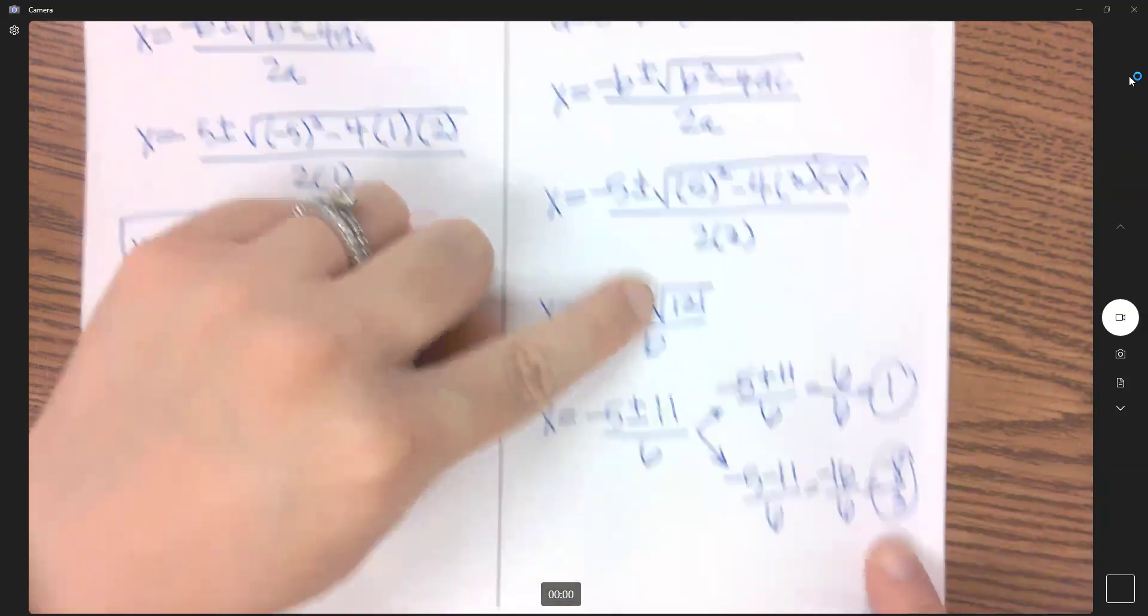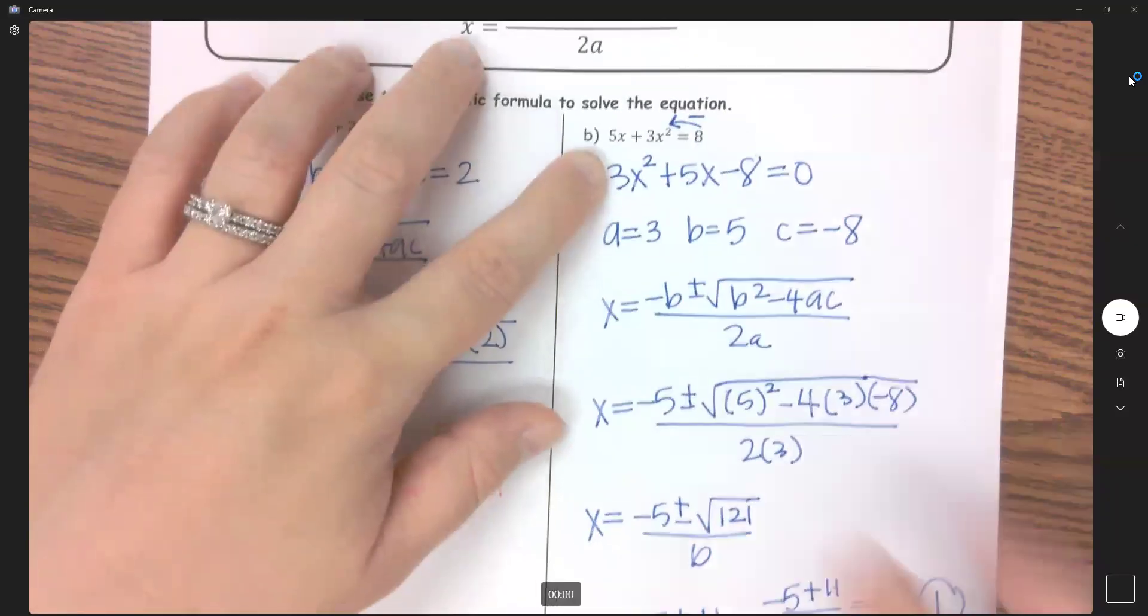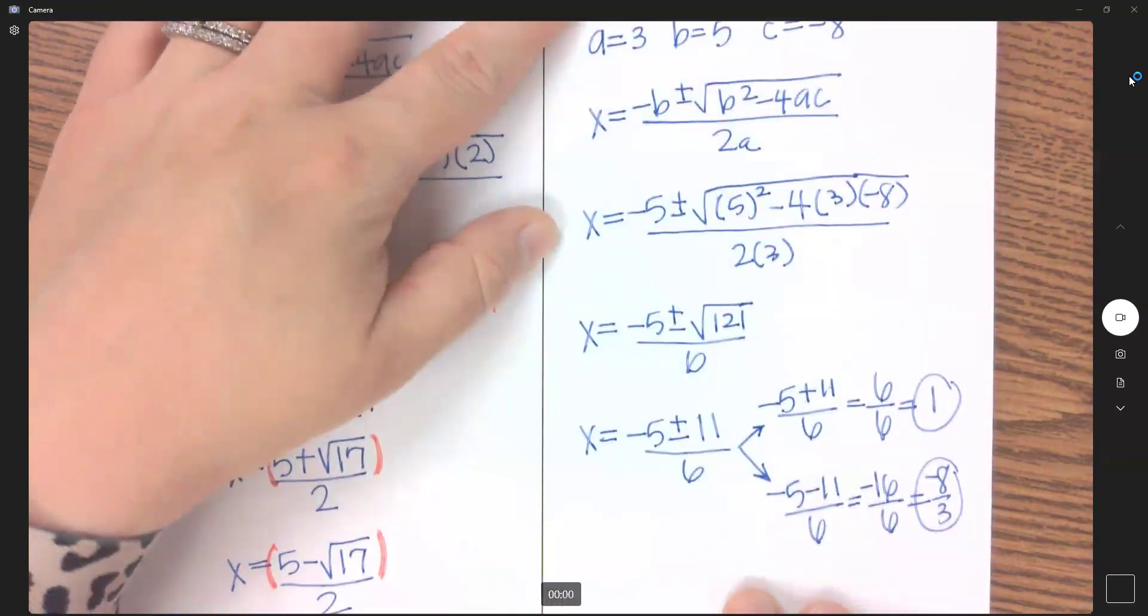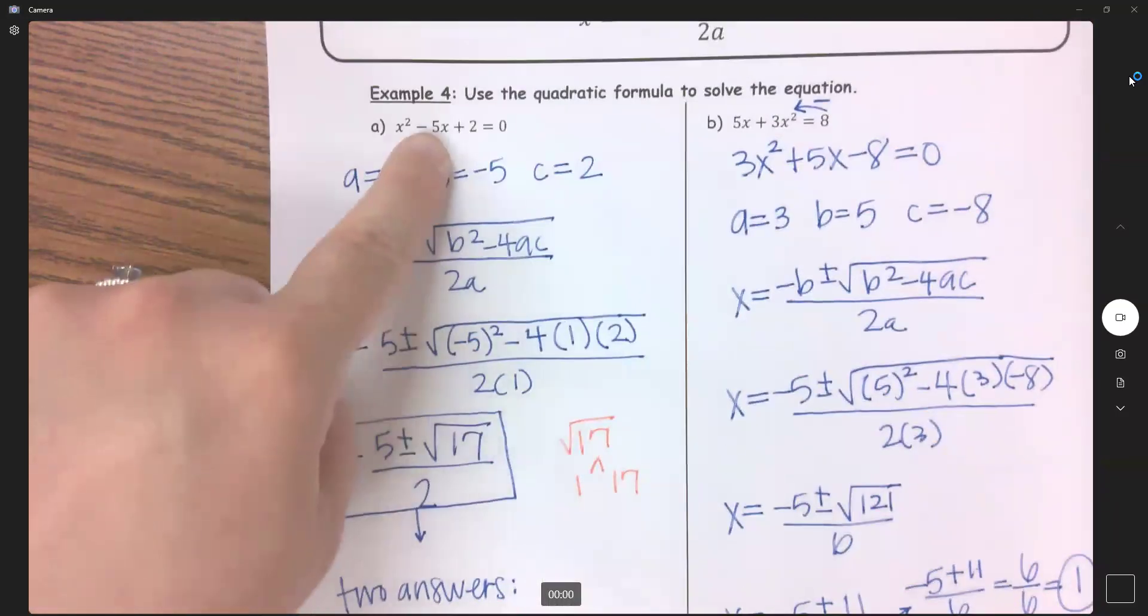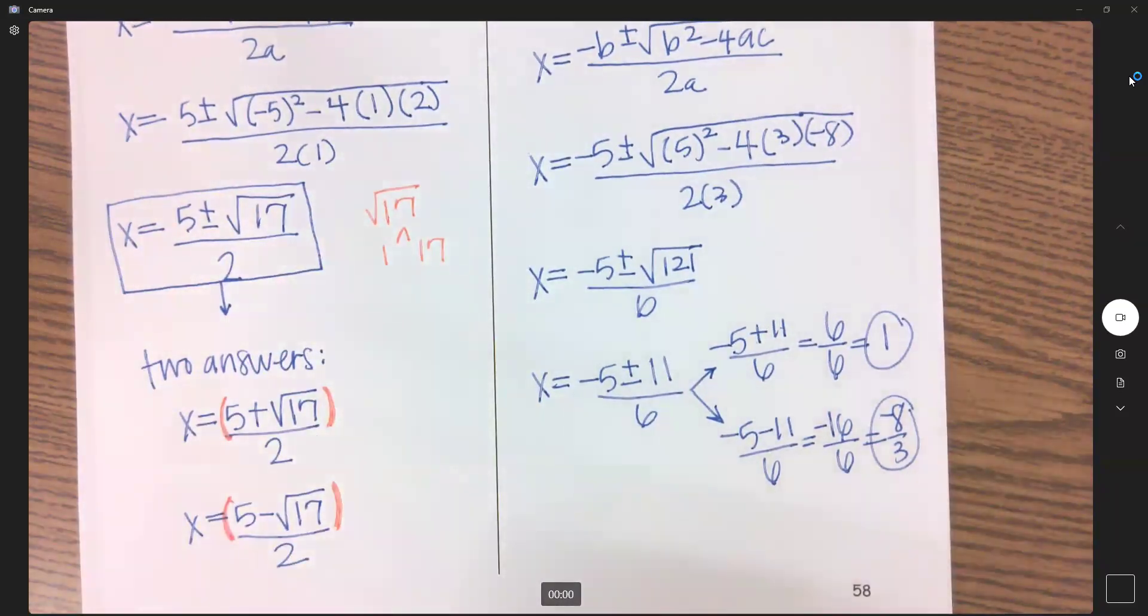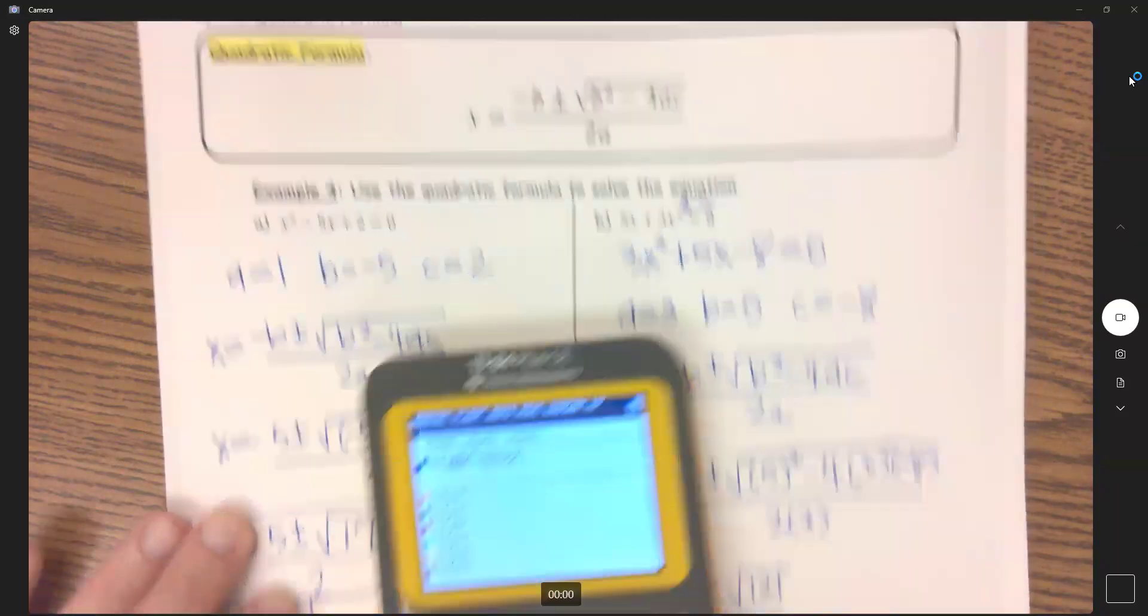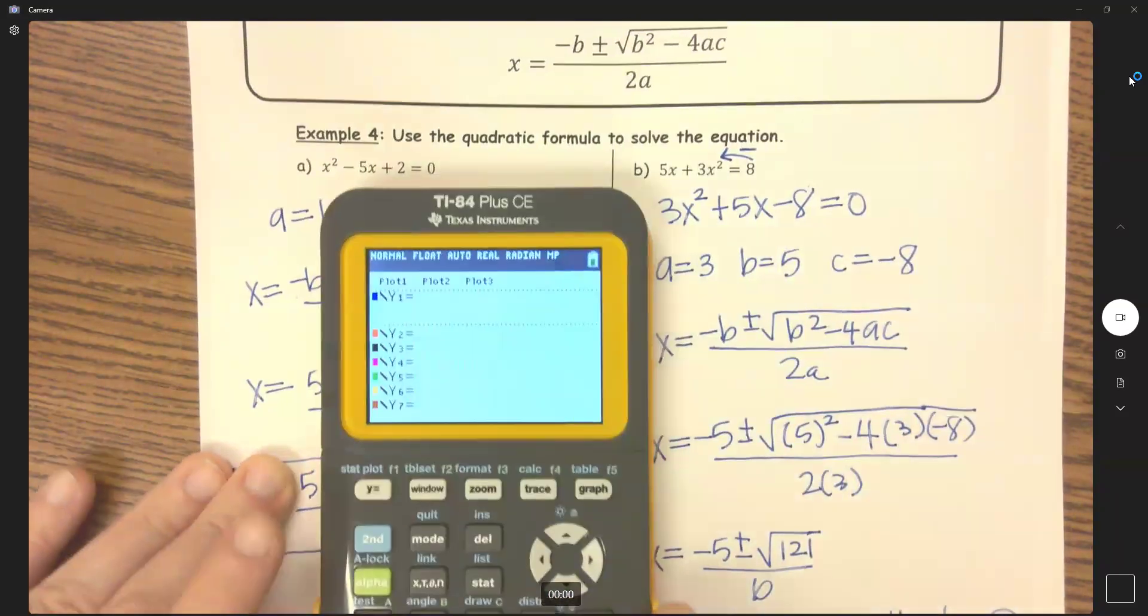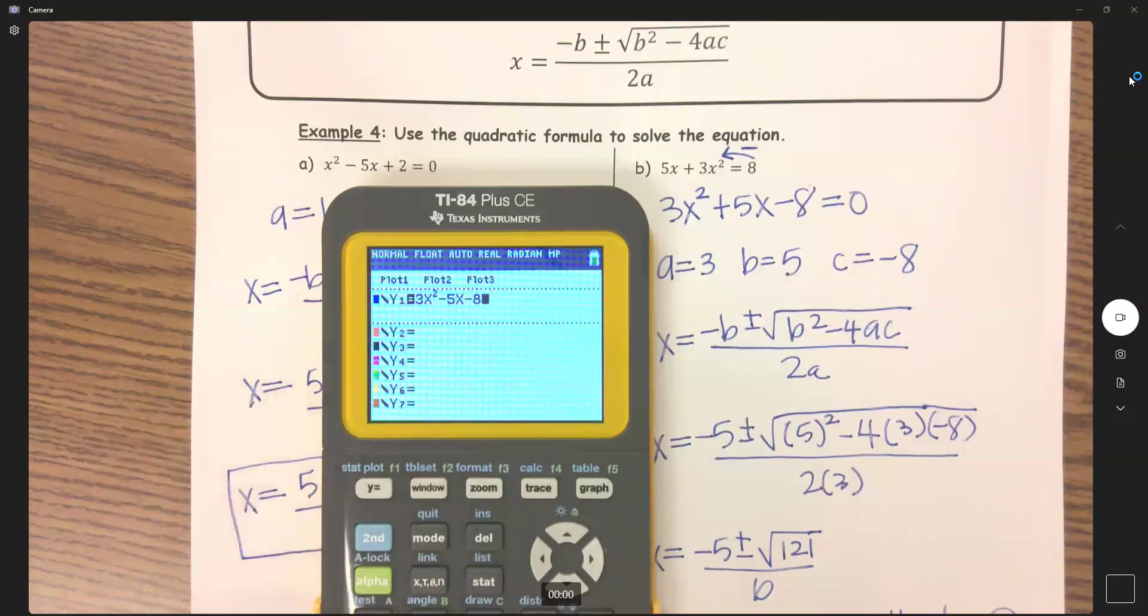So when you get an answer that's got a perfect square, that means this right here, this quadratic was factorable. You could have factored this instead of using this method. So it works even when it is factorable, but you have to use this when it is not factorable, right? So using our calculator, let's check our answer. And we have to put this in in this standard form right here. So I'm going to put in 3x squared plus 5x minus 8 in graph.